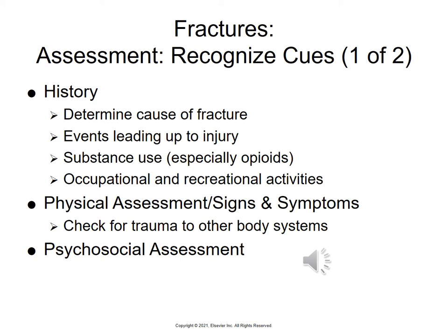In assessment, we determine the cause of the fracture by asking about events leading up to the injury, substance use whether illegal or prescribed, and the patient's job and outside activities. We want to check their circulation, check for subcutaneous emphysema, and assess for trauma to other body systems. A psychosocial assessment is also needed because patients will have pain, immobility, constipation from pain medications, and a tendency toward depression. Page 1034 has a box on assessing neurovascular status.